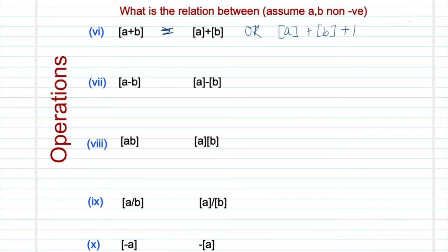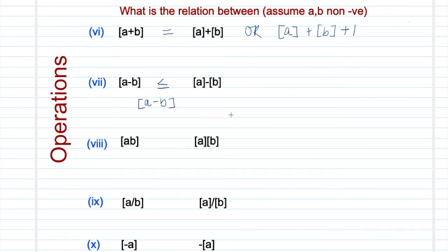Property number 7 is very similar to property number 6, so I will not spend a lot of time here and leave it as an exercise. The takeaways are very similar: you cannot assume ⌊a−b⌋ equals ⌊a⌋ − ⌊b⌋. The real relationship is: ⌊a−b⌋ equals either ⌊a⌋ − ⌊b⌋, or one less than ⌊a⌋ − ⌊b⌋. You can take some examples and arrive at the same conclusion.